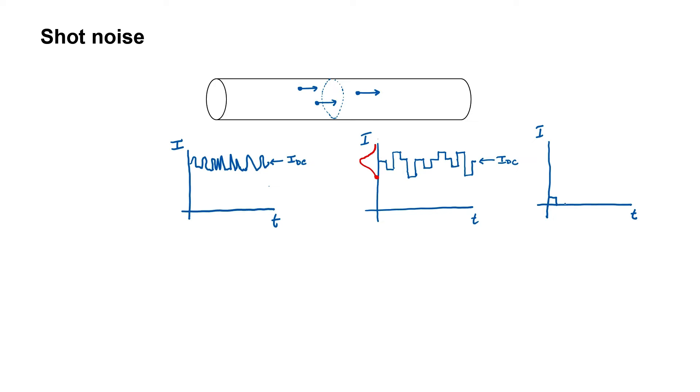Sometimes we might have one electron passing through our cross section. Sometimes we might have two. Sometimes we might have three. The point that I'm trying to make here is that you can never have a negative electron passing through cross sectional area.